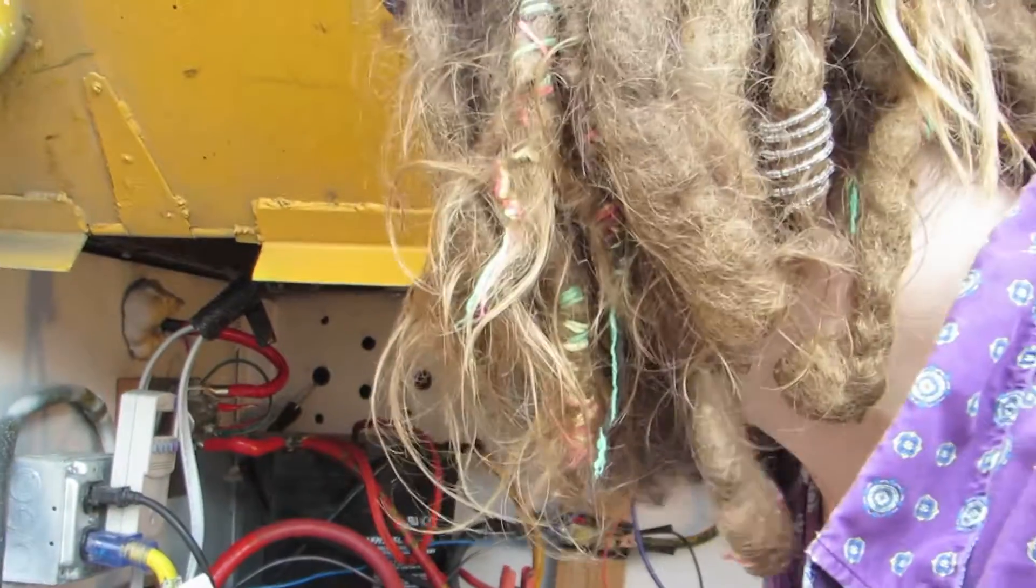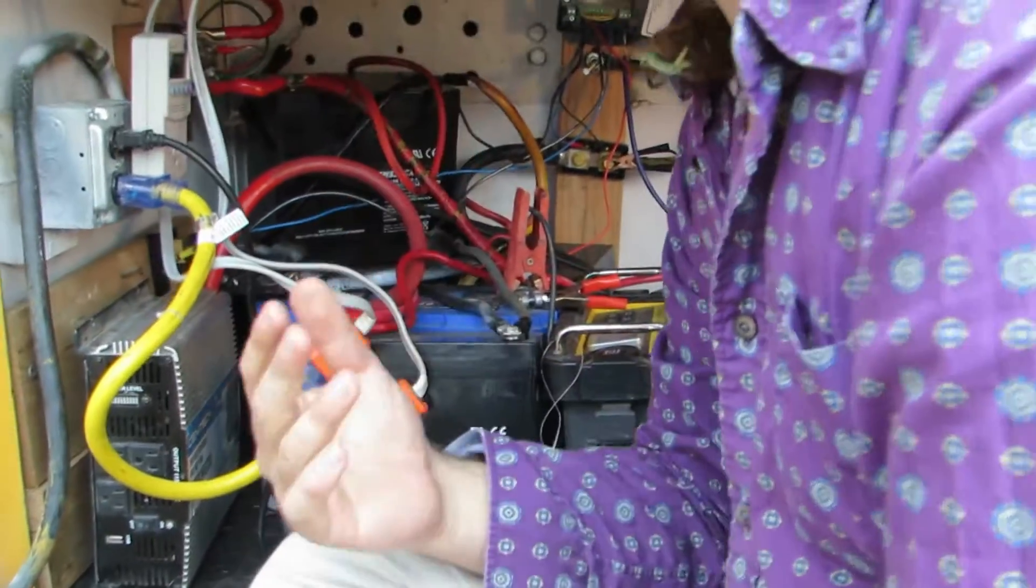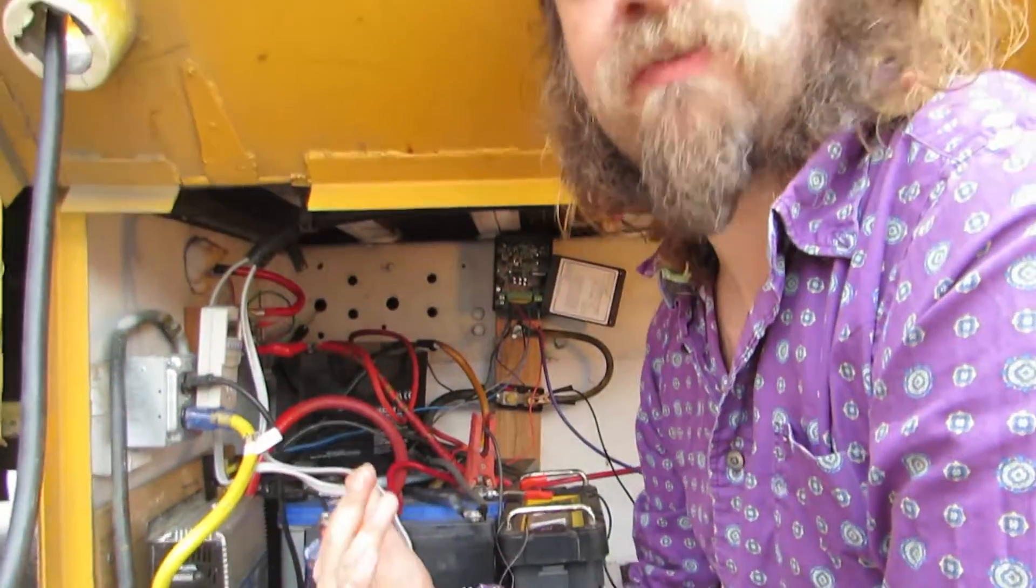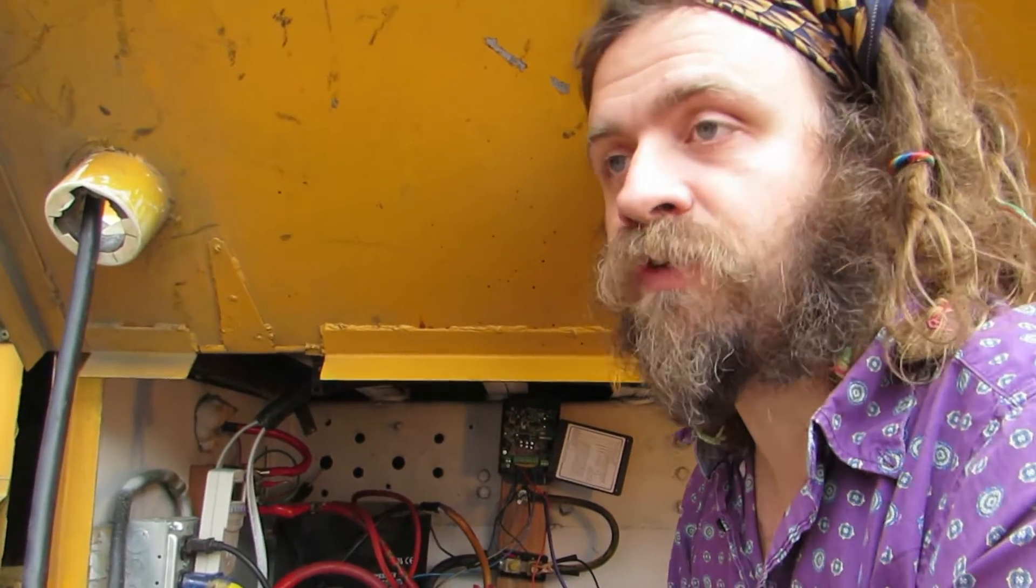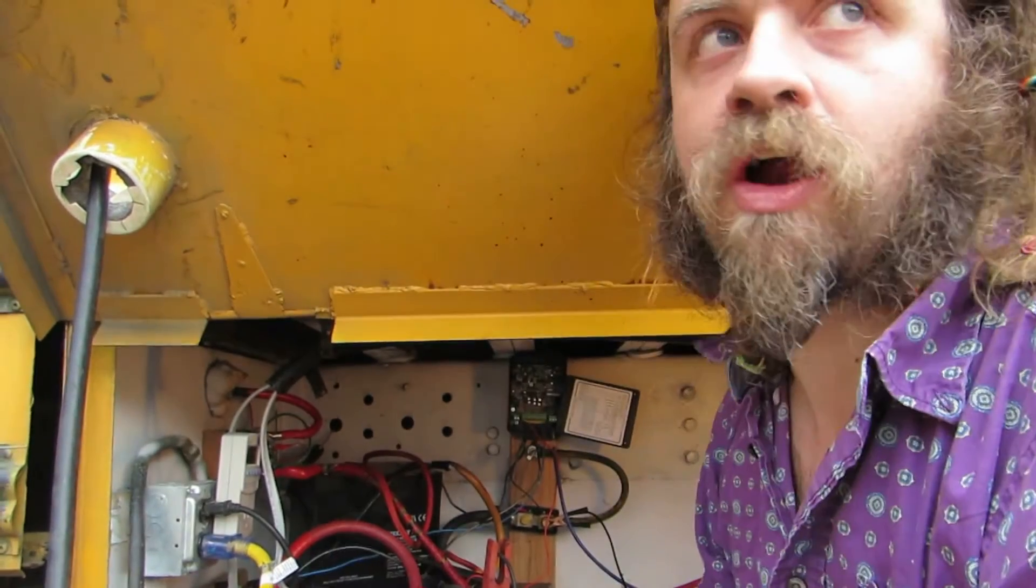the alternator is pushing current into the road batteries. Some of that current makes its way back into the house batteries. This means that sometimes as we're driving, if we're not using very much energy, we arrive at a place fully charged. And in fact, we typically do arrive fully charged.